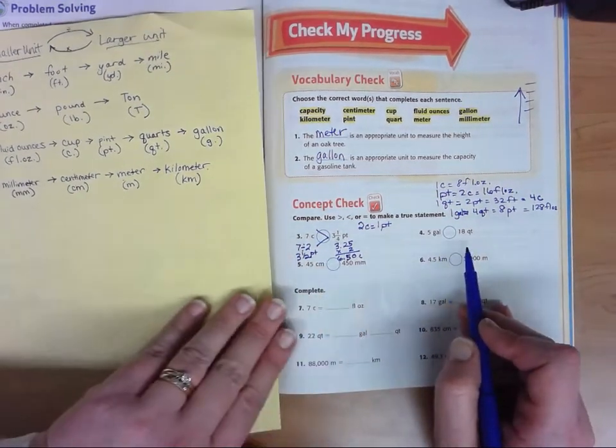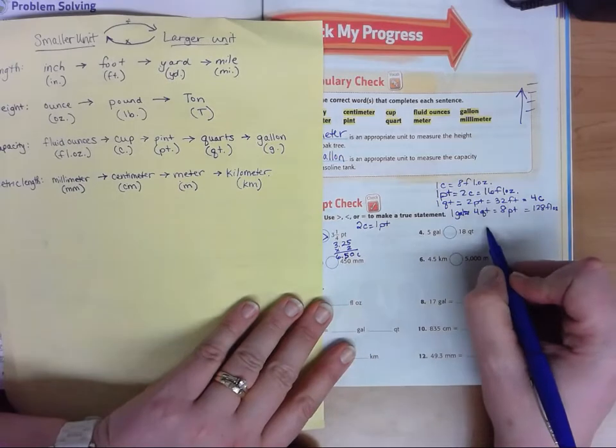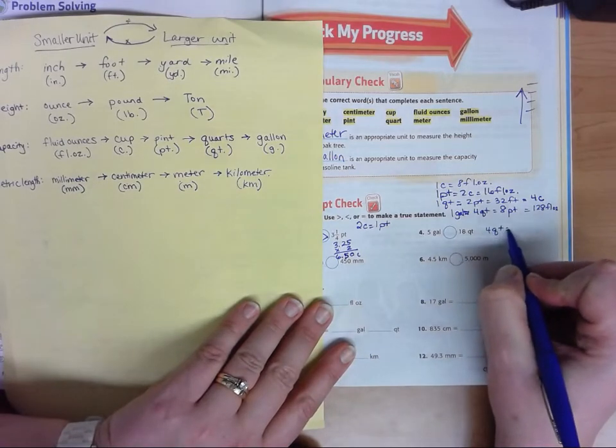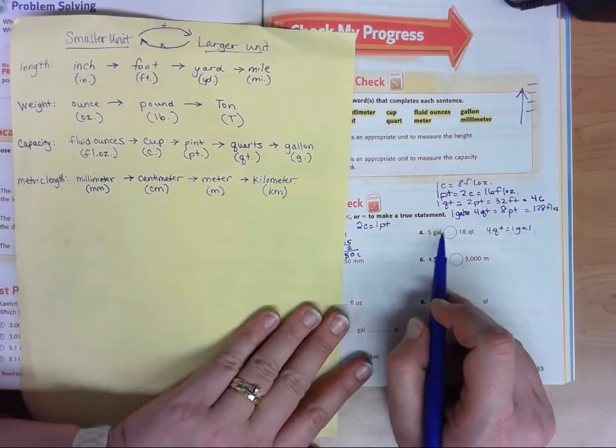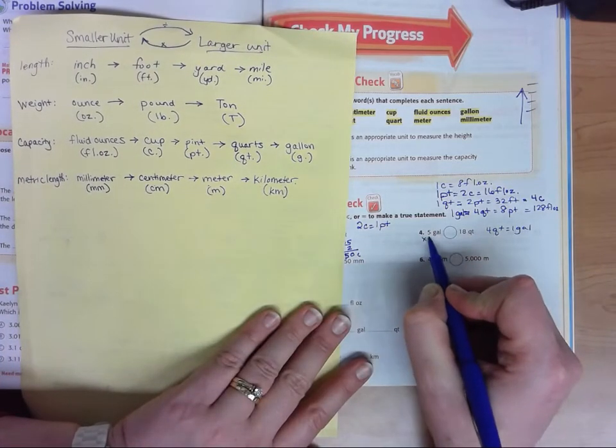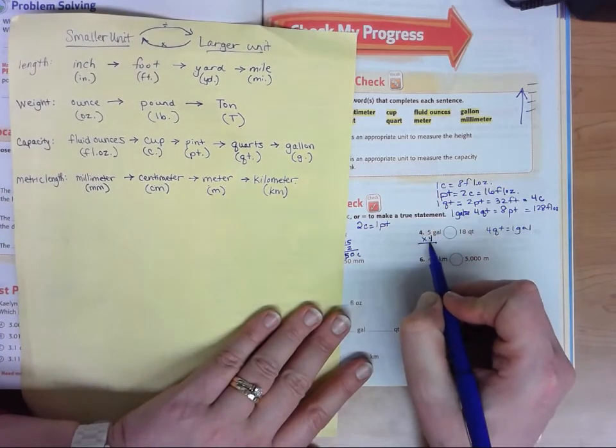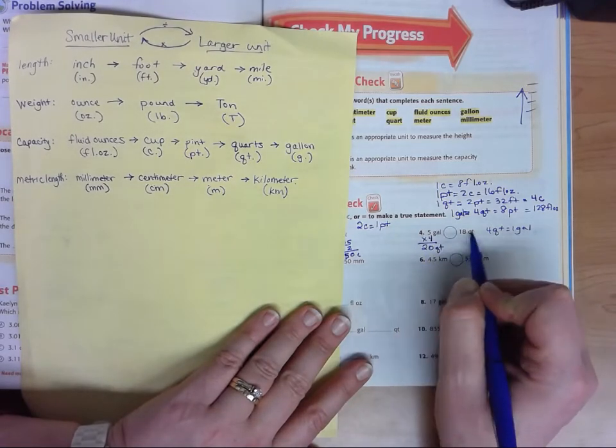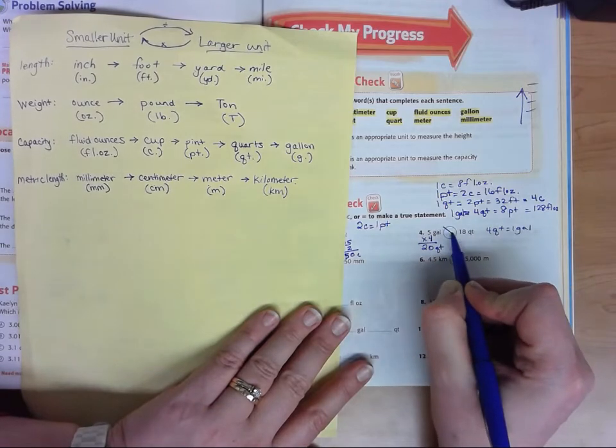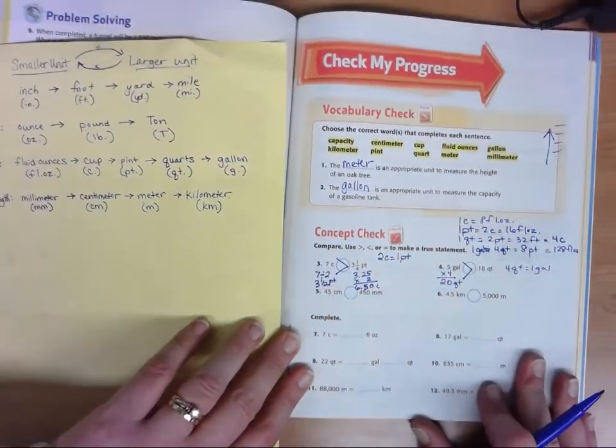If we look at gallons versus quarts, we know that there's four quarts in one gallon. So here we have five gallons. We go big to little. We can multiply this by four and five times four is 20. So 20 quarts or 18 quarts, which would be bigger? And we get 20 quarts.